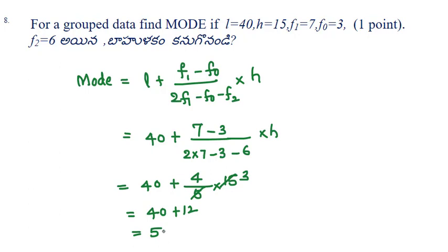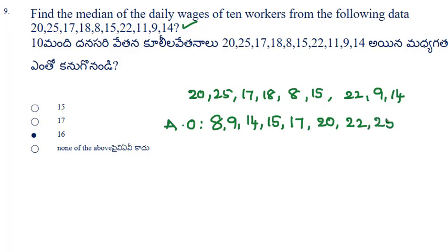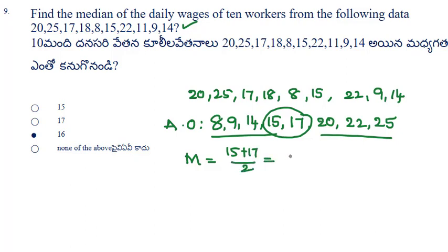Next: find the median of the given data. First, write the data in ascending order: 8, 9, 14, 15, 17, 20, 22, 25. There are two values in the middle — 15 and 17 — so median = (15+17)/2 = 32/2 = 16.